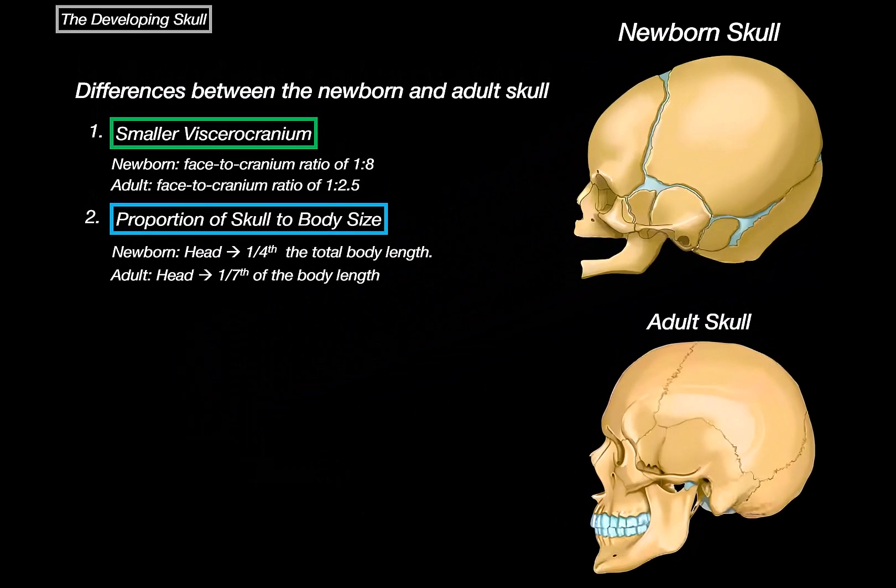Both the facial skeleton and the body grow to catch up with the size of the cranium. This is the second major difference between a newborn and adult skull.